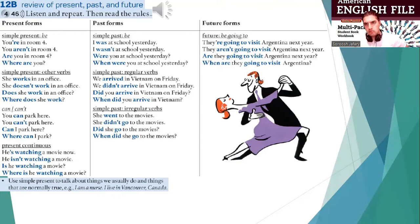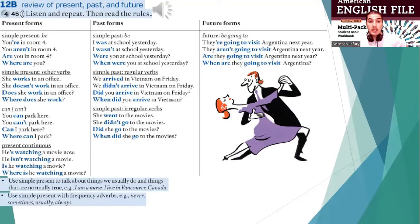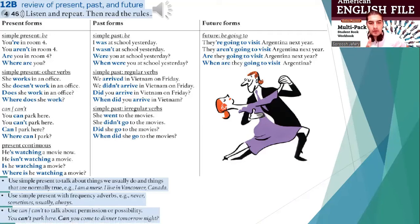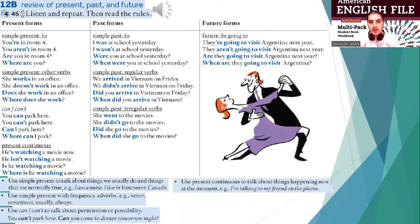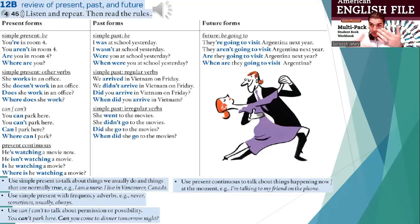Choose simple present with frequency adverbs. What are they? Never, sometimes, always, usually. Choose can and can't to talk about permission or possibility. For example, you can't park here. Can you come to dinner tomorrow? I can swim. Choose present continuous to talk about things that are happening now and continuing. For example, I'm teaching you English right now and I'm still doing it. I'm talking to my friend on the phone. I am going to the gym.